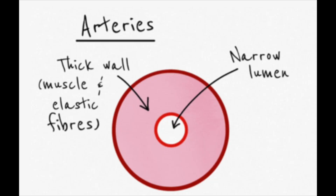Now we turn our attention to discuss various blood vessels, starting with the arteries. You need to be able to describe their structure and function. Starting with their structure, arteries have a narrow lumen — the hole that blood flows through is very narrow. Because of that, blood flows at high pressure, and to stop the blood vessels bursting, they need thick muscle and elastic fibre walls to withstand that pressure.